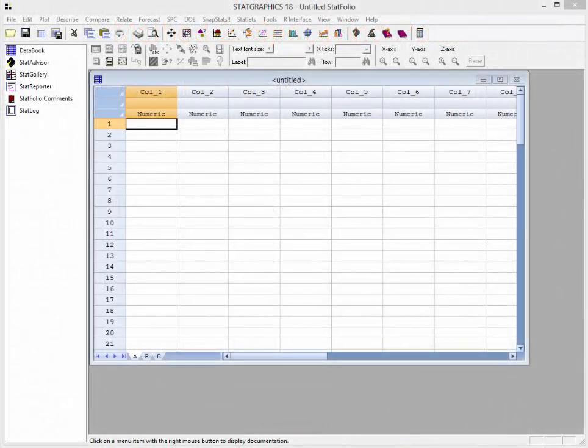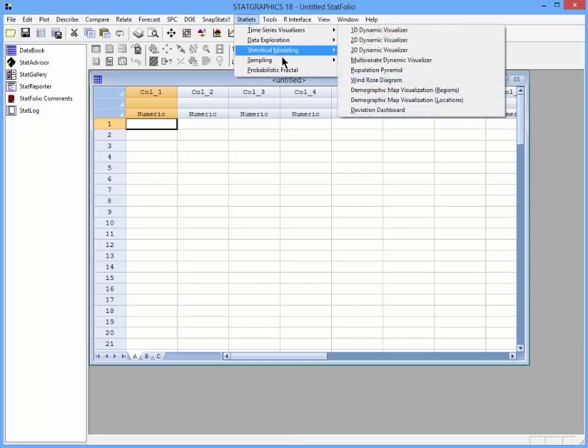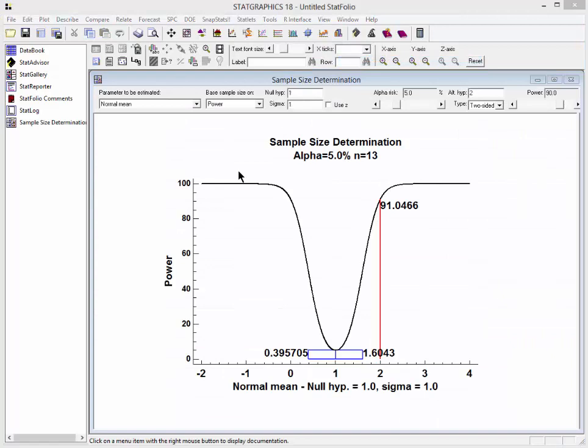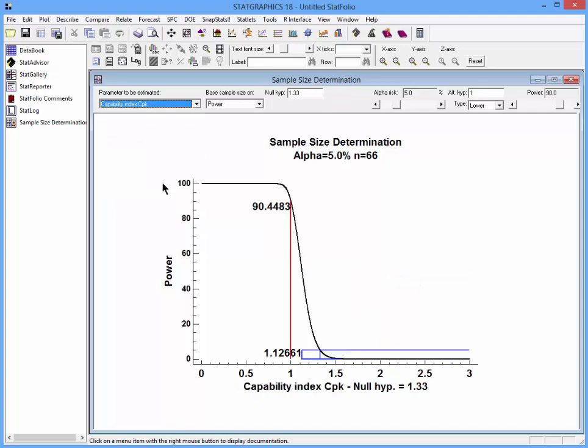Let's return to StatGraphics 18, and this time let's apply the power approach. I'll select StatLets, Sampling, Sample Size Determination.